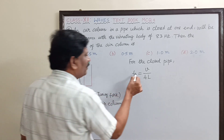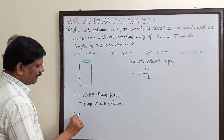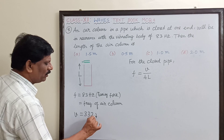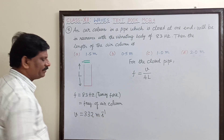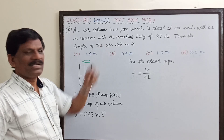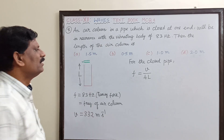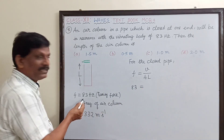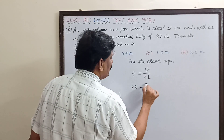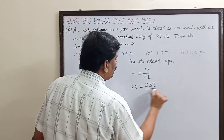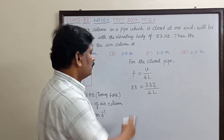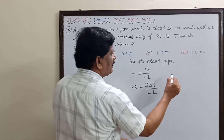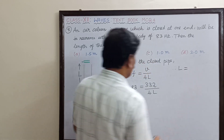We take the velocity as the standard value per Laplace's formula: 332 meters per second. If the value is not given, we can assume this value. Substituting: 83 equals 332 divided by 4L. We want the length of the air column, so L is taken on the left-hand side.